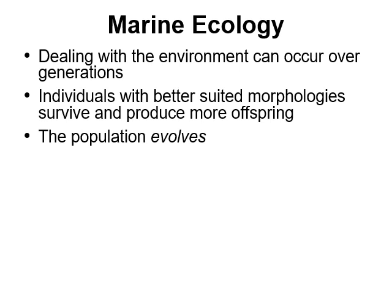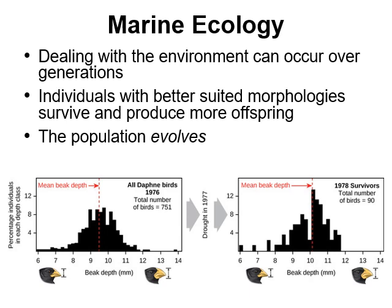Individuals with poor traits disappear over time. The best example of this, which I apologize doesn't come from the marine world, is Darwin's finches on the Galapagos Islands off the coast of Ecuador. Researchers Peter and Rosemary Grant studied birds on the island of Daphne Major before and after a drought. These birds eat seeds, and the drought made the seeds on the island very tough and hard to break open. That made it very bad to have a shallow beak and much better to have a wider, broader, tougher beak. Many individuals starved because they couldn't break open the seeds.